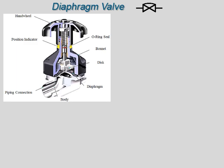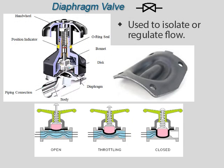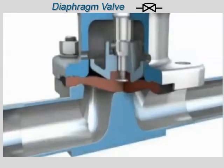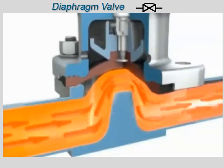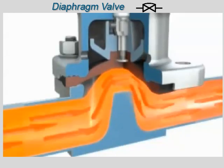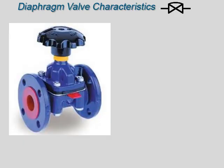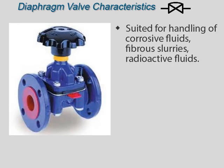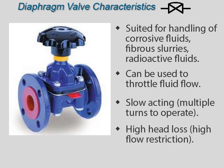A diaphragm valve is a linear motion valve used to isolate or regulate flow. The name is derived from its flexible disc made of rubberized material or thin metal, which mates with a seat located in the open area at the top of the valve body to form a seal. Because the diaphragm isolates the body cavity of the valve from the bonnet, stem, and disc, these types of valves are good for use with dangerous liquids that could be hazardous if they leaked out along the stem. The main advantages are that they are suited for handling corrosive fluids, fibrous slurries, and radioactive fluids, and they can be used to throttle fluid flow. They are slow-acting and have high head loss compared to other valves, and are typically smaller in size.